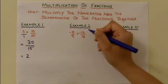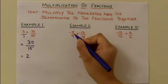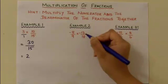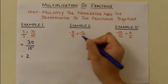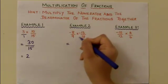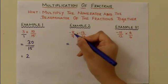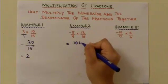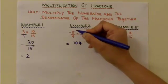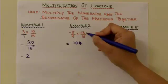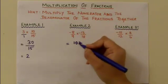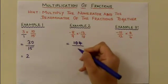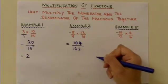Moving on to example 2, we have two fractions: -8/9 and -13/18. Multiplying the numerators together, -8 times -13 equals +104, because a negative number multiplied by a negative number gives a positive number. The denominator is 9 times 18, which equals 162.